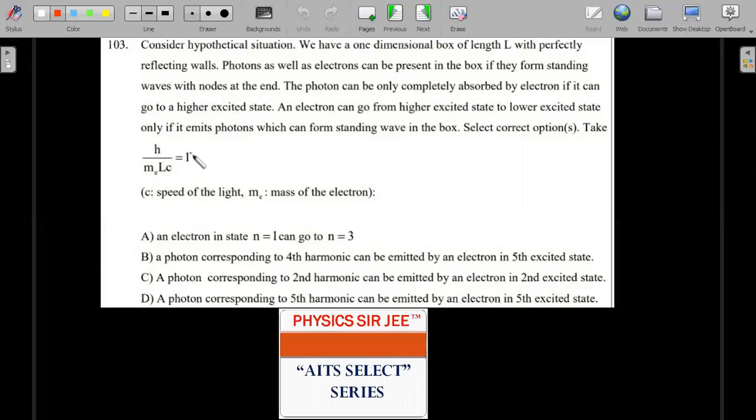Take h divided by m times L times c, where all these are standard universal constants, L is equal to 1, and L is the length of the box. The options are: an electron in state n=1 can go to n=3, a photon corresponding to fourth harmonic can be emitted by an electron in its fifth excited state, and so on.